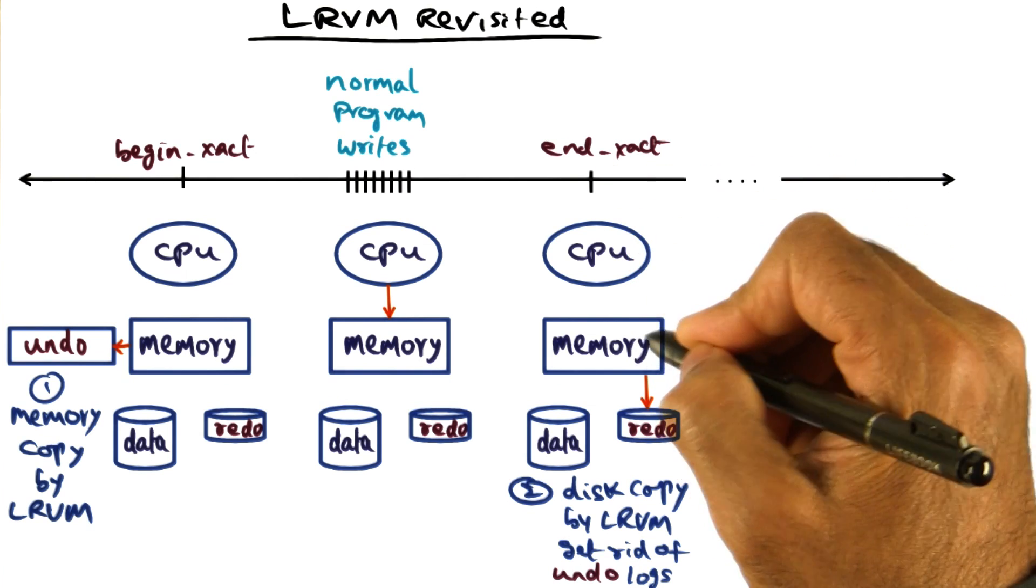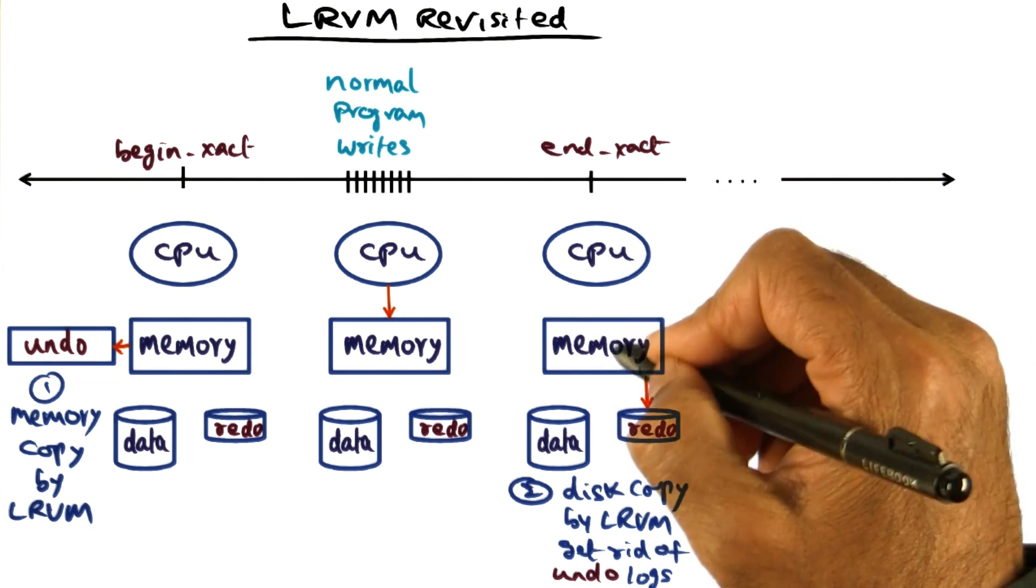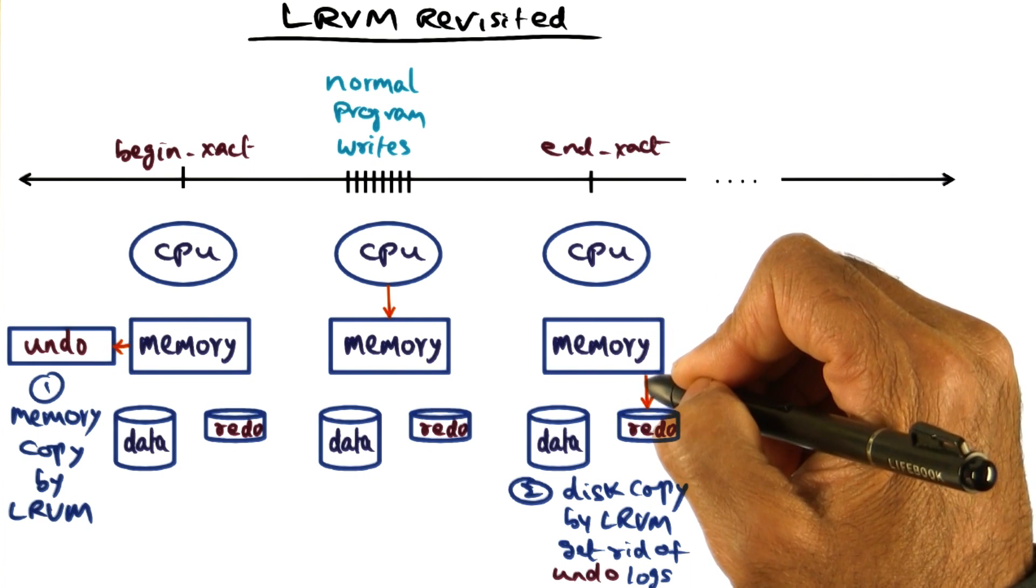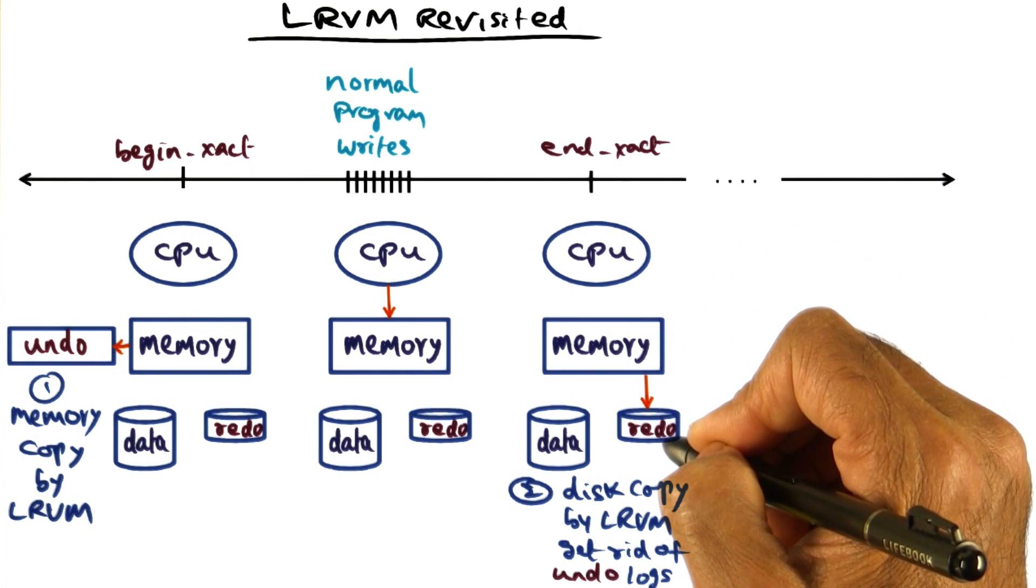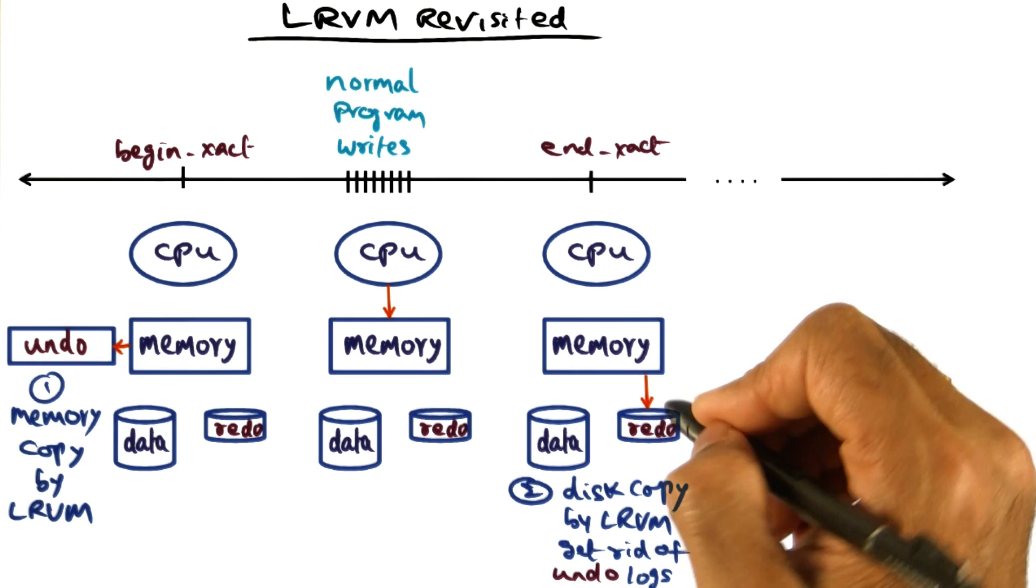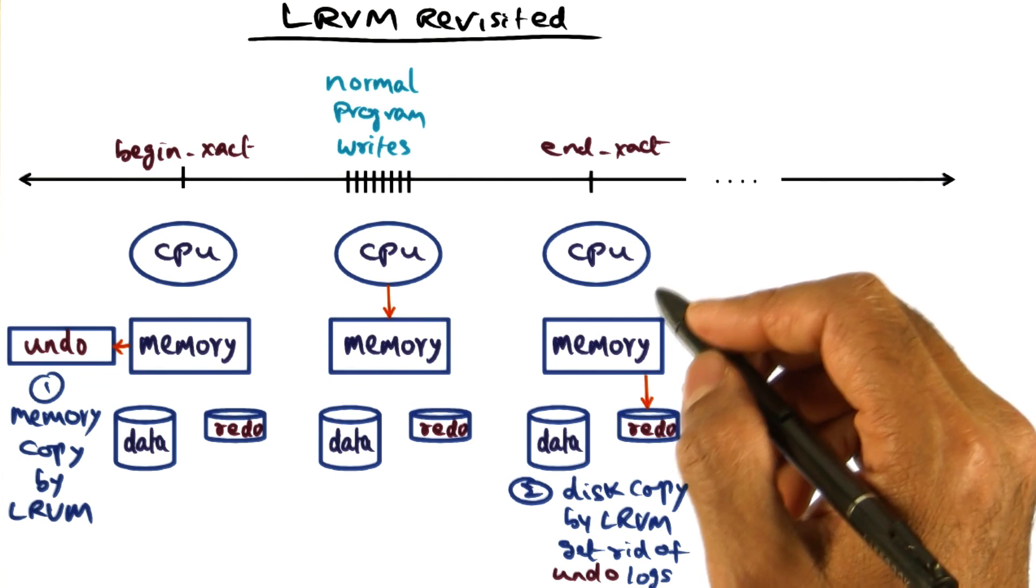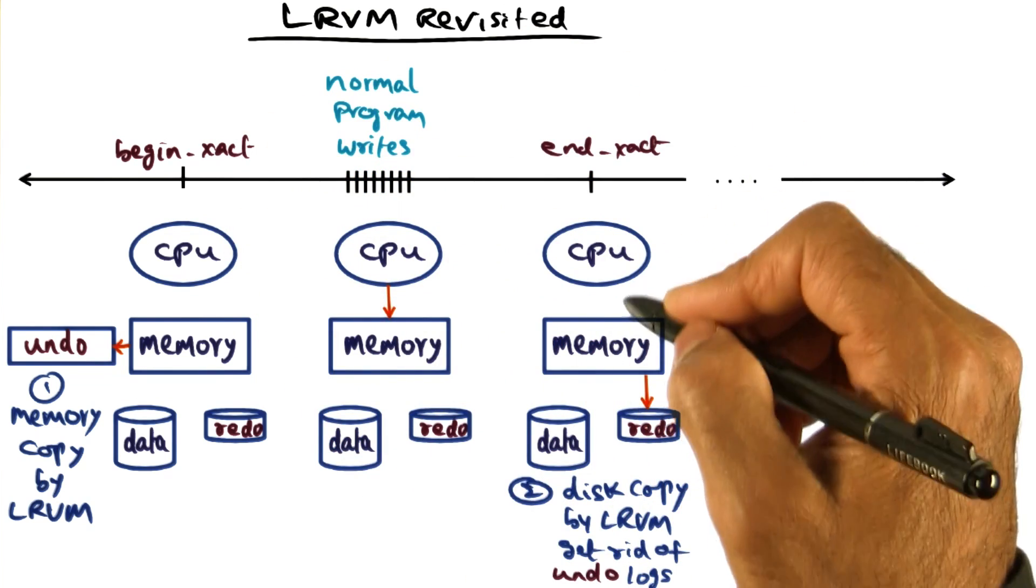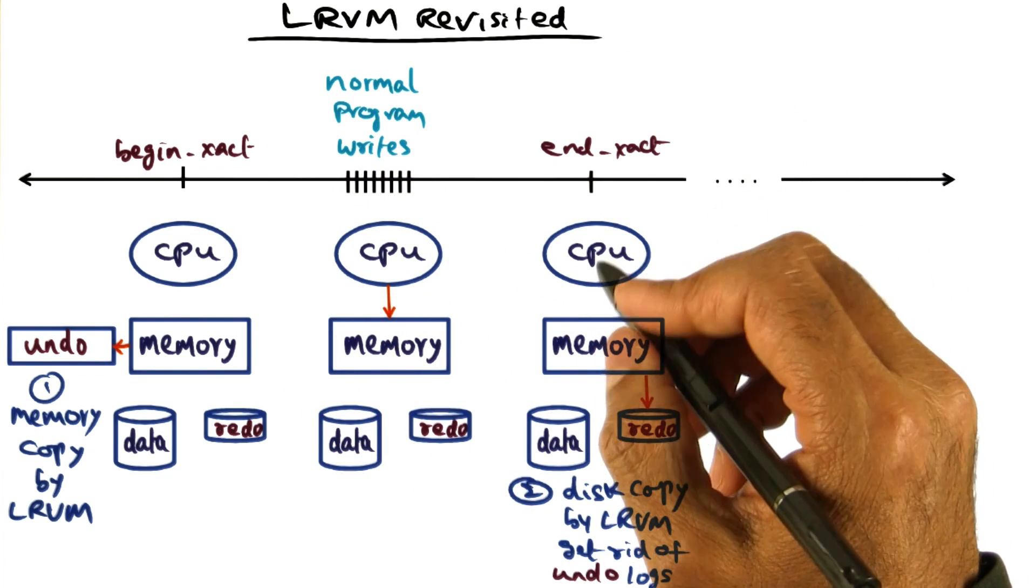And therefore at this point, the changes that have been made to virtual memory are written out as a redo log record and forced to the disk by LRVM. We know disk IO is slow and the more you do it, the slower will be the subsystem that is using these LRVM primitives.